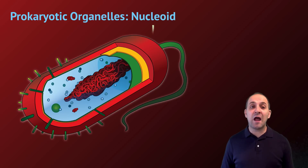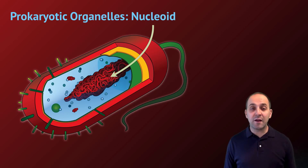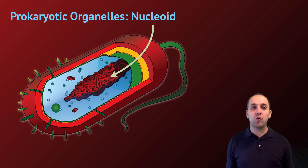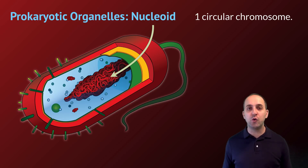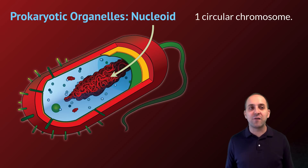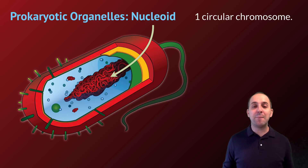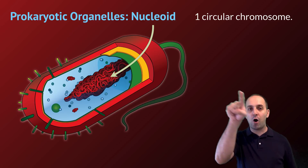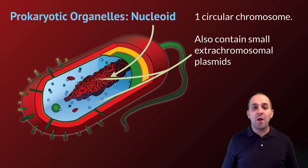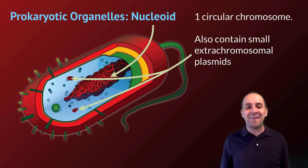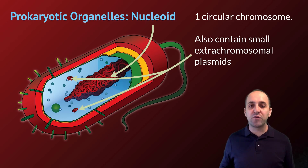Looking at the parts we find inside prokaryotic cells, we see a couple of features to spotlight. The DNA is not in a nucleus, but it is organized in the middle of the cell in a region referred to as the nucleoid. Prokaryotic cells have one chromosome that is circular in structure — it looks like a giant tangle, but 'circular' means you can start at one end and go all the way around and come back to that end. Prokaryotes are also unique in that they have small extra chromosomal circular pieces of DNA called plasmids.